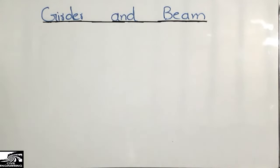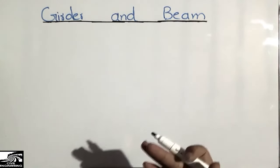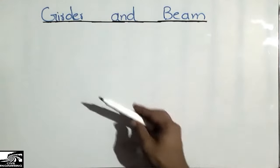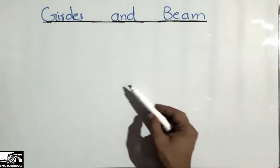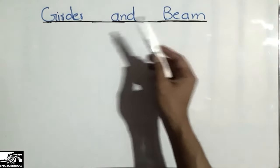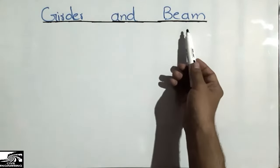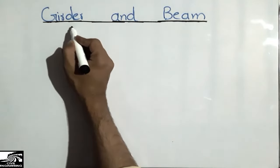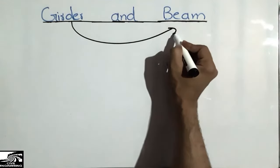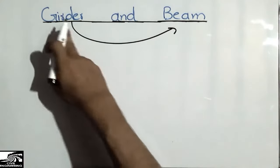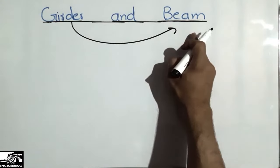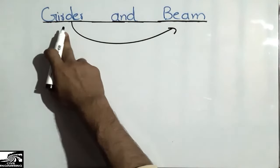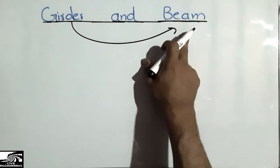Hey guys, in this video we'll watch the 3D animation of the difference between the girder and the beam. I will show some theoretical concepts, where they are used, and how they are differentiated from one another. The girder is also a type of beam — it is a horizontal member and a flexure member. A beam is a flexure member, and a girder is also a flexure member; they both experience tensile and compressive stresses.